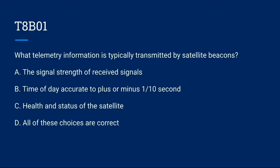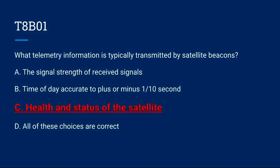T8B01: What telemetry information is typically transmitted by satellite beacons? A. The signal strength of received signals. B. Time of day accurate to plus or minus one-tenth of a second. C. Health and status of the satellite. Or D. All of these choices are correct. The correct answer is C: health and status of the satellite.